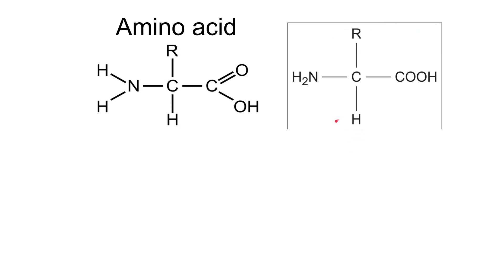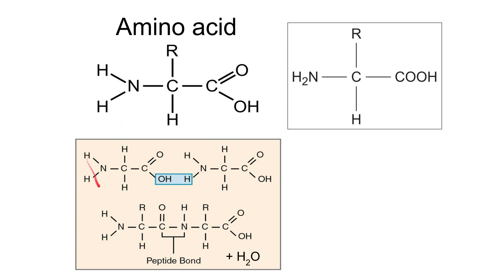Since a protein is made up of many monomers, we need to bond amino acids together. Here we have two amino acids — in this case the R has been replaced with a hydrogen, making these glycine amino acids. The OH portion of the carboxylic acid group on one amino acid and a hydrogen from the amine group of the other are highlighted. When these two react together, the OH and H are lost, producing H2O — a water molecule. That means this is a condensation reaction.